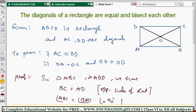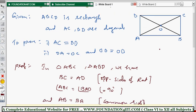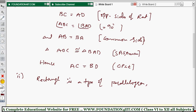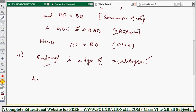Now we need to prove they bisect each other, meaning AO equals OC and OB equals OD. For this, we can state directly that a rectangle is a type of parallelogram, and we know that in a parallelogram, diagonals bisect each other. Therefore, the diagonals of a rectangle also bisect each other, and hence OA equals OC and OB equals OD.